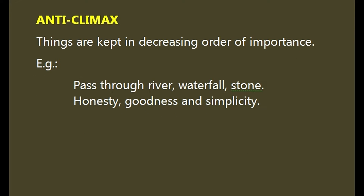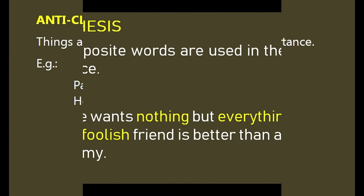Anti-climax: things are kept in decreasing order of importance. For example, 'pass, through, river, water, stone' — the importance of the things decreases as we go from left to right. Another example: 'honesty, goodness, and simplicity' arranged in decreasing order.